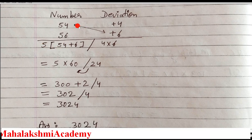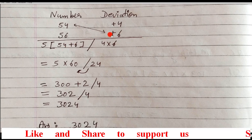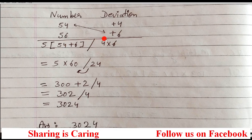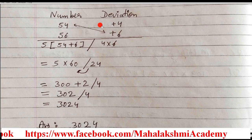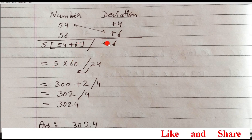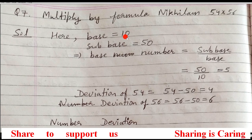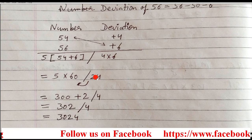When we start the answer, first write the base number, which is 5. Then put an arrow. Take a chosen pair — for example, 54 plus 6 — then put a slash, and write 4 multiplied by 6. You can take either 54 and 6, or 56 and 4 — it's your choice. The product goes on the right side. So 54 plus 6 is 60, and 4 into 6 is 24. Now check how many zeros are in the base: only one zero. So in the second section, only one digit should exist. If there are more digits, you have to shift.